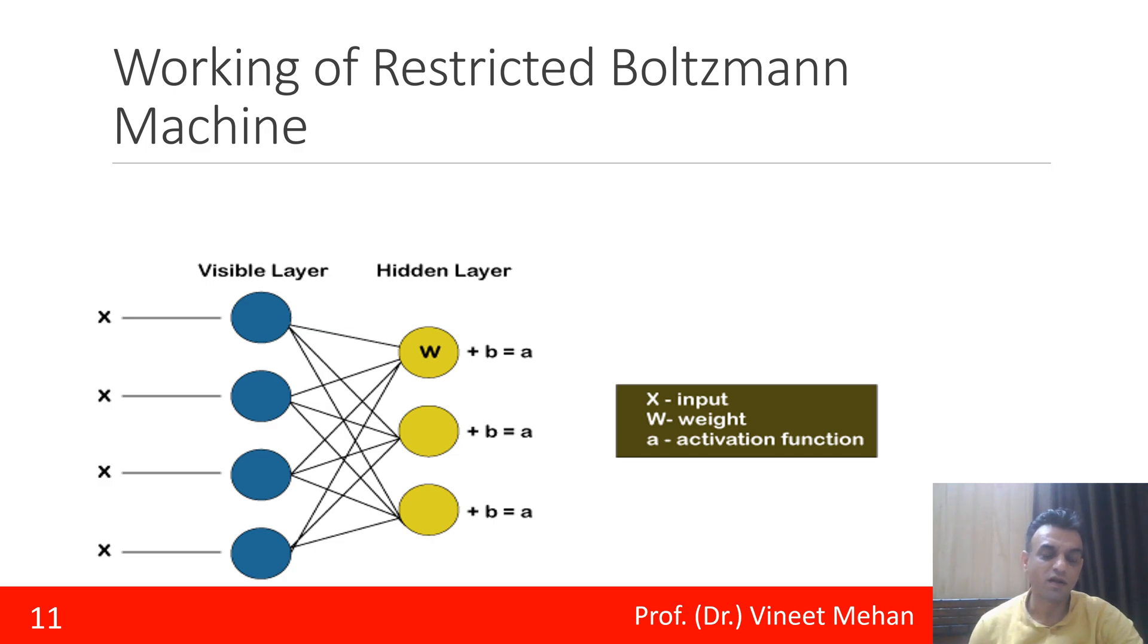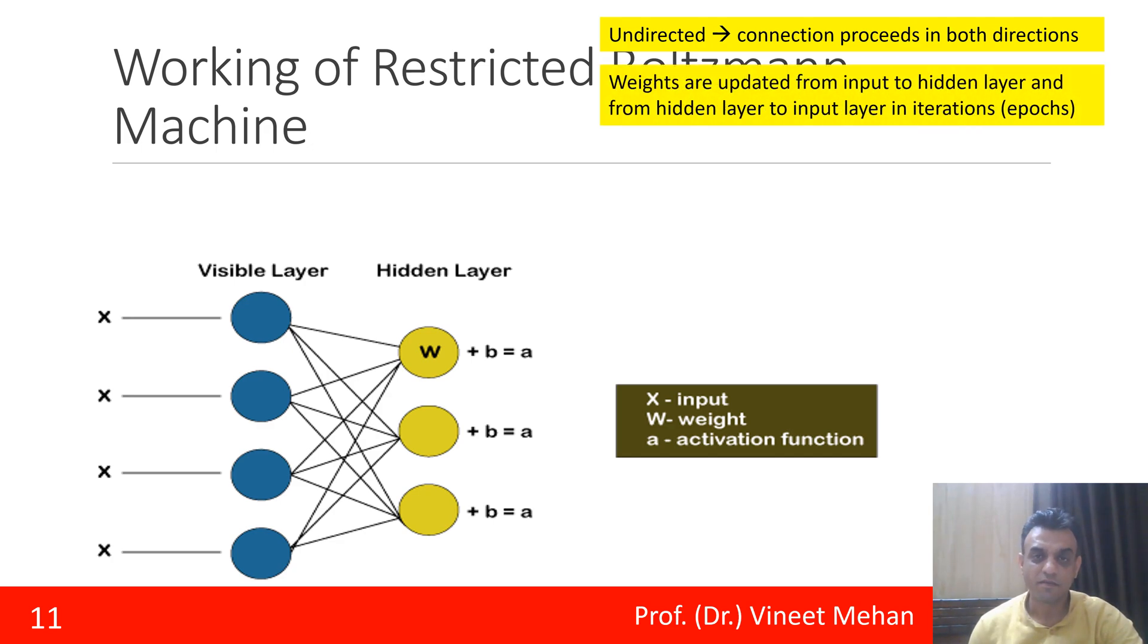The connections are undirected. That means it proceeds in any direction: single direction, both directions, or any direction. When we proceed from one direction to another direction, weights are updated, and this happens in iterations. These iterations are called epochs.